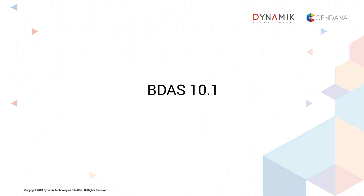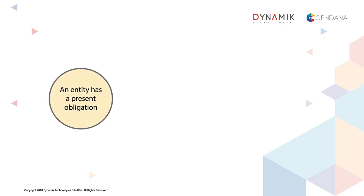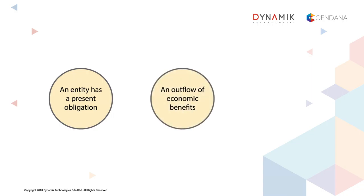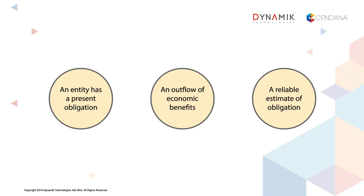The first module under B-10 is called provisions. A provision should be recognized when the following are met. Number 1, an entity has a present obligation as a result of a past event. Number 2, an outflow of resources embodying economic benefits will be required to settle the obligation. And number 3, a reliable estimate can be made of the amount of the obligation.